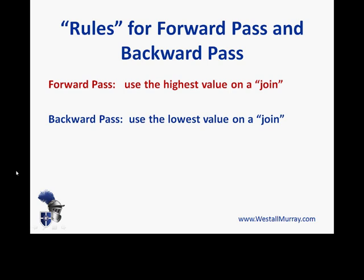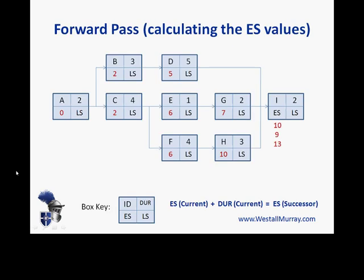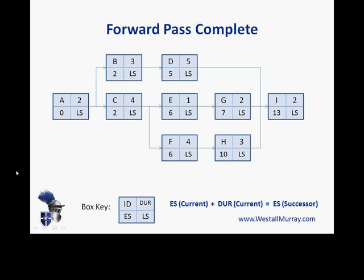Going back to our rule for the forward pass, we use the highest value on a join. For I, if we go the top route A, B, D — from D we get a value of 10. Coming from G, 7 plus 2 equals 9. Coming from H, 10 plus 3 equals 13. So the highest value is 13, and that's what we put into I. That completes the forward pass.